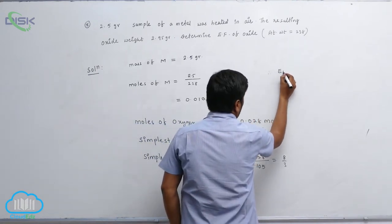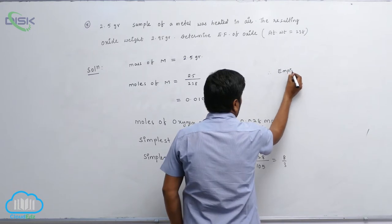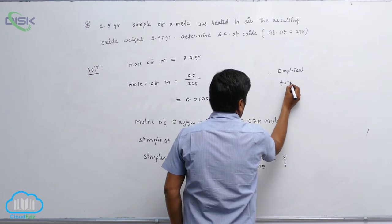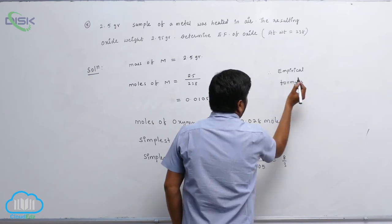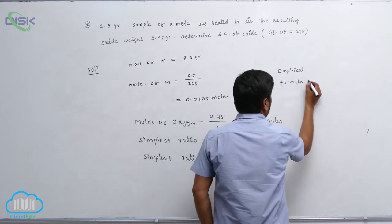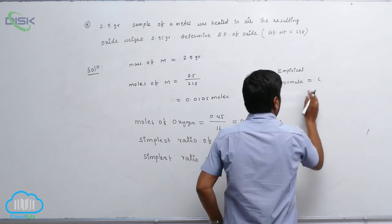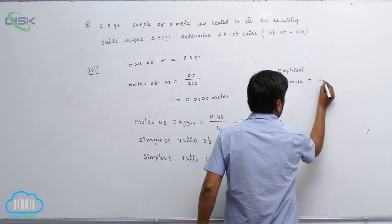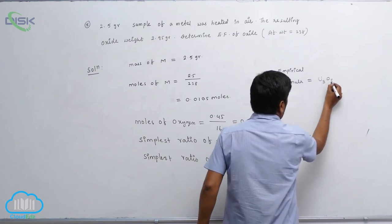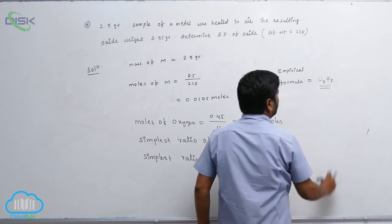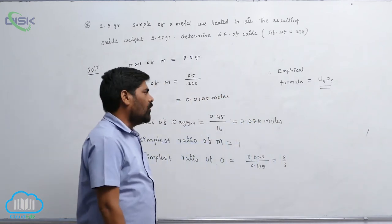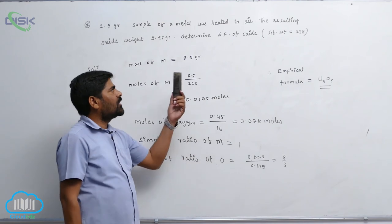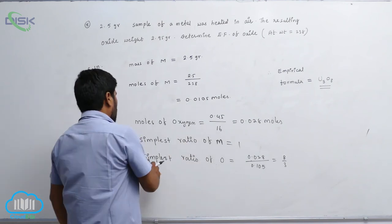Therefore, the empirical formula — since this is uranium-238 — is U₃O₈. This is one of the problems related to empirical formula.